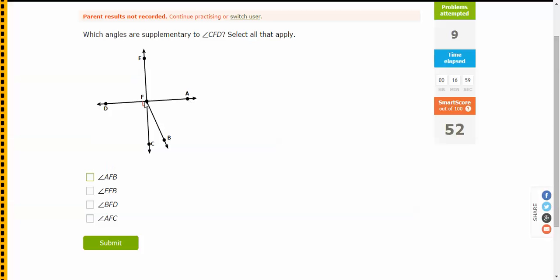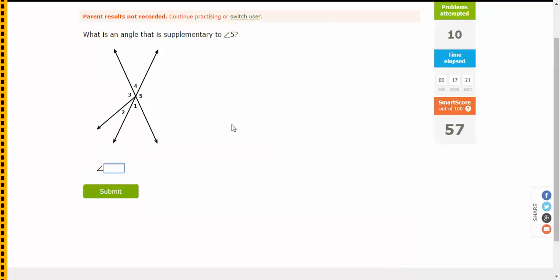AFB? No, that's too little. EFB? No, too much. BFD? Too much. AFC? Ah, AFC will do it. That'll make it add up. That took me longer than it should have.